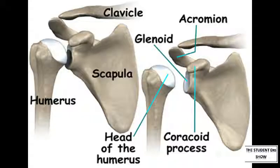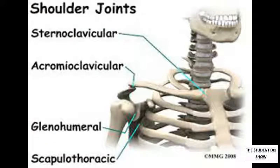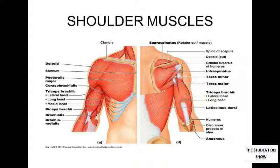The anatomy of the shoulder. The shoulder consists of three bones: the clavicle, scapula and humerus. These bones come together to form four joints: the sternoclavicular joint, acromioclavicular joint, glenohumeral joint and scapulothoracic joint. The scapulothoracic joint is not a true anatomical joint. The muscles involved in the movement of the shoulder are the muscles of the rotator cuff — supraspinatus, infraspinatus, subscapularis and teres minor. Other muscles involved are the deltoid, biceps, triceps and pectoralis major.